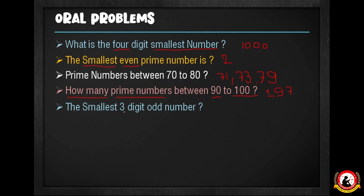Next question: what is the smallest three-digit odd number? The smallest three-digit number is 100, but 100 is even. So we add 1: the answer is 101. 101 is the smallest three-digit odd number. Perfect!